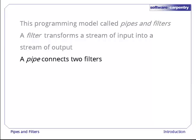A pipe is just a connection between two filters. Behind the scenes, the computer may do some clever things to move data around, but from the user's point of view, all a pipe does is move bytes from one process to another.